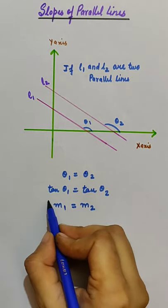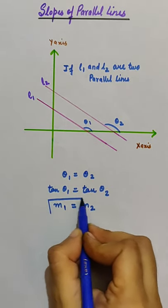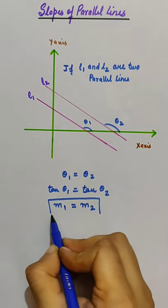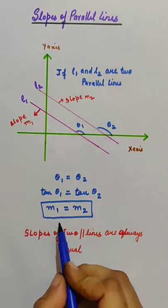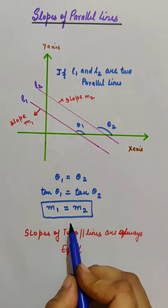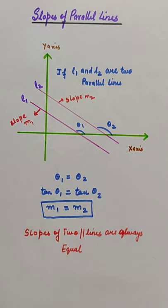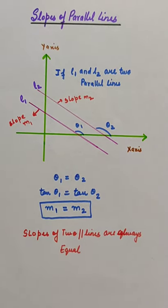So we conclude that when two lines are parallel, their slopes are always equal. This is how the slopes of two parallel lines are related, and it's simple.